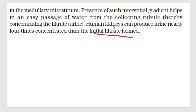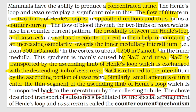Human kidney can produce urine nearly four times concentrated than the initial filtrate formed. For MCQs: mammals have the ability to produce concentrated urine; both the loop of Henle and vasa recta set up counter current; in the cortex the osmolarity is 300 milliosmol and in the medulla 1200 milliosmol; and the gradient is set by two things — sodium chloride and urea.